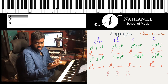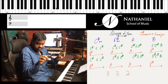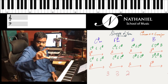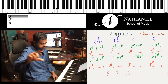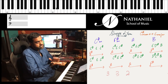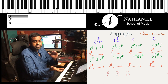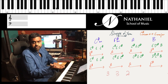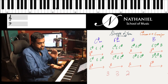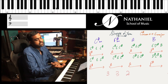One way to count it is to write down all your 8th notes — 1-&, 2-&, 3-&, 4-&. You will be playing at the 1, the & of the 2, and the on of the 4. So the accented beats within those 8th notes give you that 3-3-2 feel.